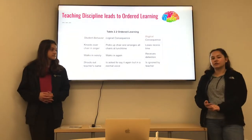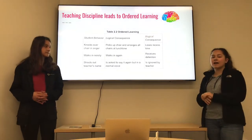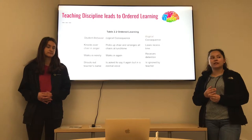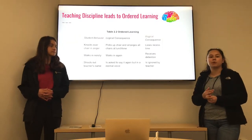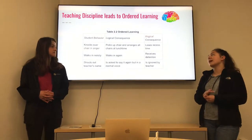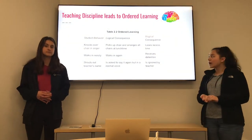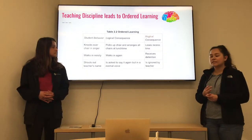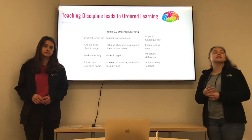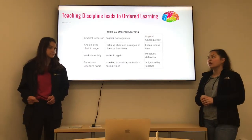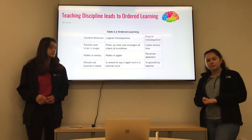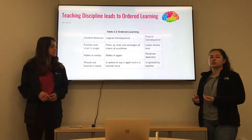Teaching discipline leads to ordered learning. It's really important to be consistent and have consequences be logical with the student's behavior. You don't want to assign just any punishment because then they won't understand what they did. You want to provide appropriate ways for them to handle situations in the future. For example, if a student knocks over a chair, you can ask them to pick it up and arrange chairs at lunchtime — taking away recess would be an illogical consequence. If a student walks in noisily, ask them to walk in again rather than giving detention. If a student shouts out the teacher's name, ask them to say it again in a normal voice rather than ignoring them.